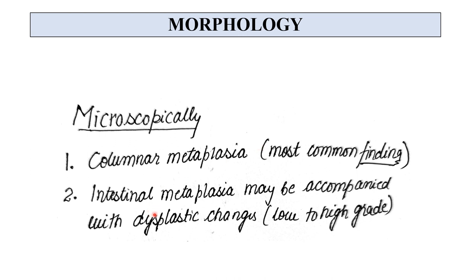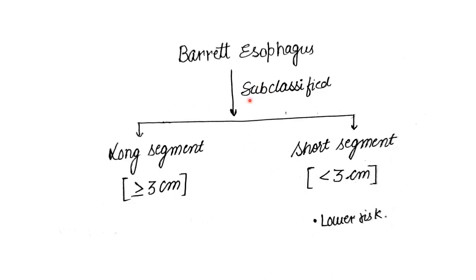The intestinal metaplasia may be accompanied by dysplastic changes, which can be low to high grade. Barrett's Esophagus is subclassified on the basis of the length of esophagus involved into long segment (greater than or equal to three centimeters) and short segment (less than three centimeters). Patients with short segment disease are at lower risk of developing carcinoma than those with long segment disease.